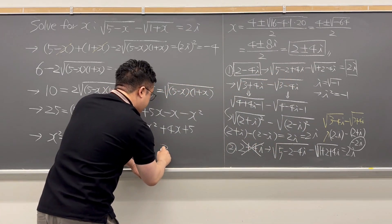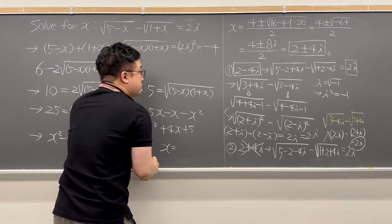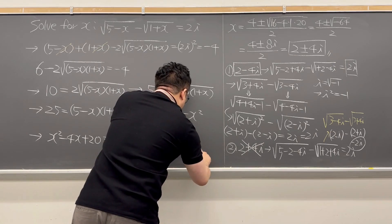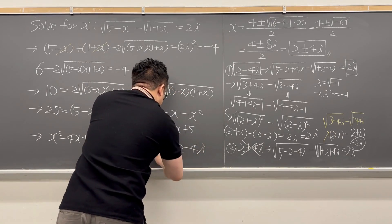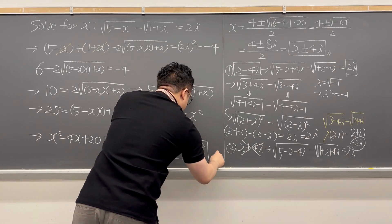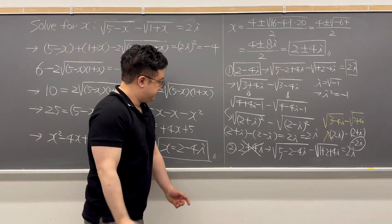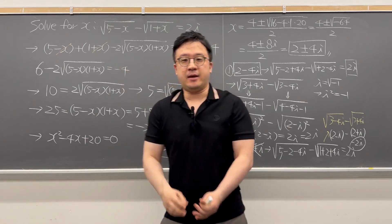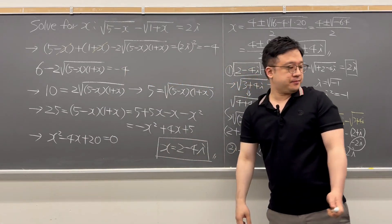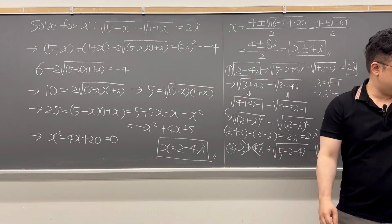The final answer is x equals 2 minus 4i. Thank you.